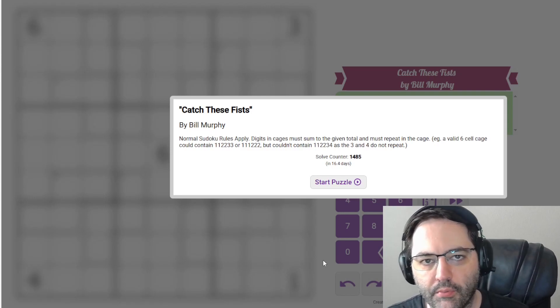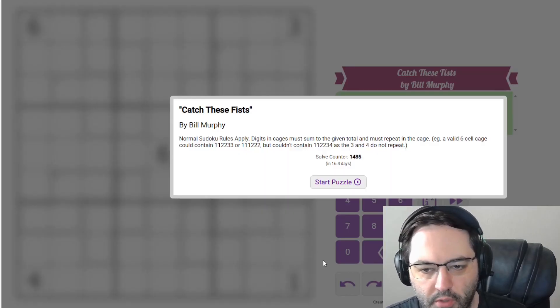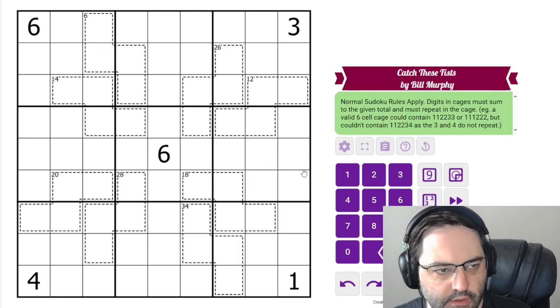Hi everyone, this is the Gas Walkthrough for April 24th. I'm Philip Newman. Today I'm solving Catch These Fists by Bill Murphy. This is a variant of Killer Sudoku.